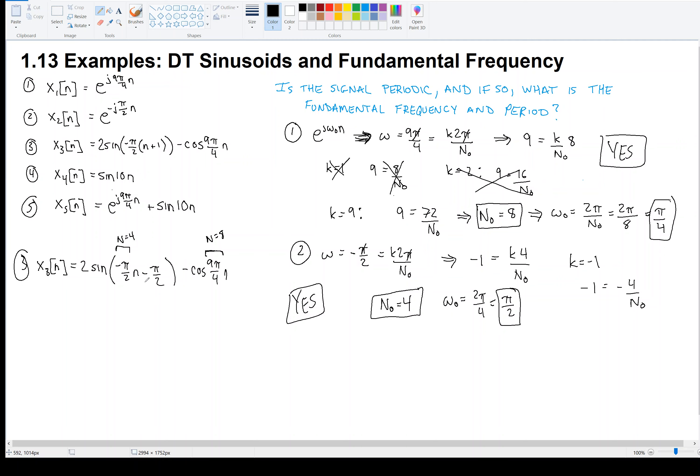So, individually, this guy repeats every 4, every 8, every 12, 4, 8, 12, 16 samples in time. And this guy repeats every 8, 16, 24, 32 samples in time. So when do they repeat together? They repeat together, and that's the least common multiple. They repeat together every 8, also every 16, but the least common is 8. So we conclude that yes, signal 3 is periodic. Its fundamental period is 8, and that means its fundamental frequency is 2π over 8 or π over 4. Yes.